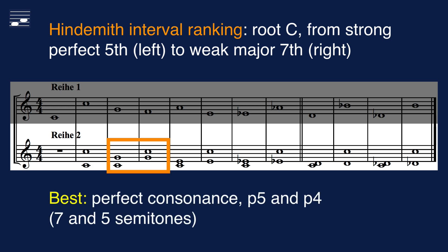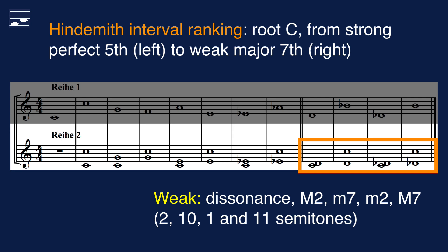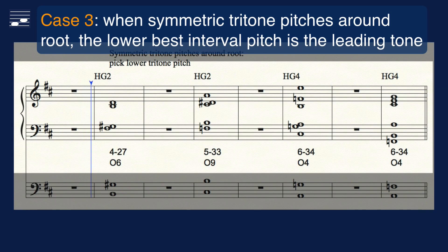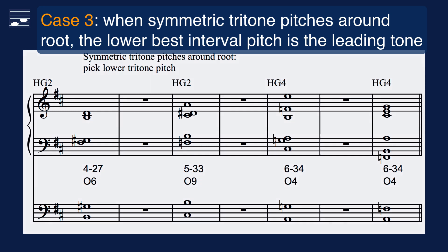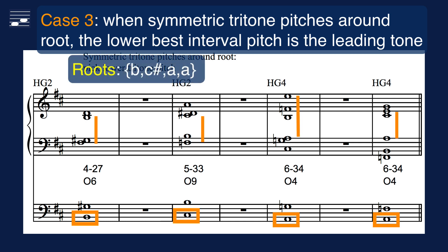The strongest intervals are the perfect consonances. A lower ranking position is assigned to the imperfect consonances — the 3rds and 6ths — while dissonant seconds and 7ths are the weakest intervals. In case of a symmetric interval relation of a tritone around the root we choose the lower best interval pitch. The example has two chords from group 2 and 4 each. First I determine the chord roots, and the results show that some structures are in inverted position. From the tritone interval analysis we then identify the leading tone.